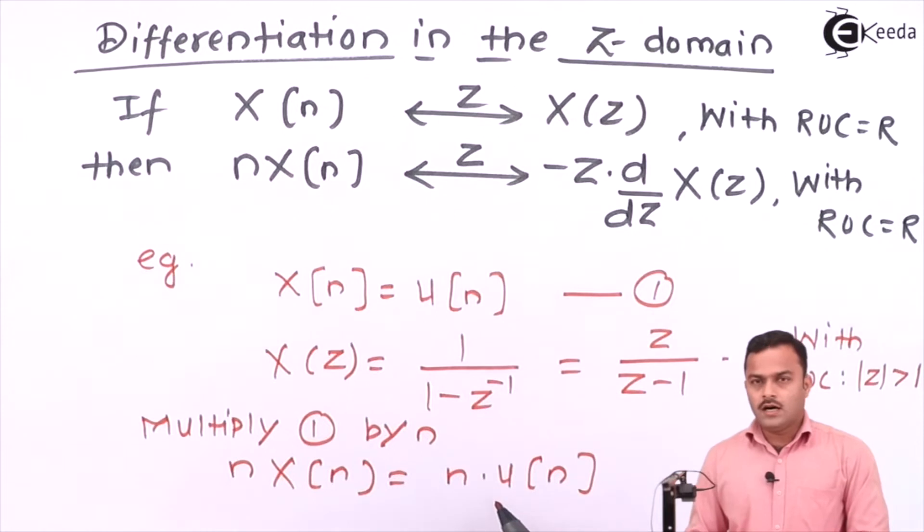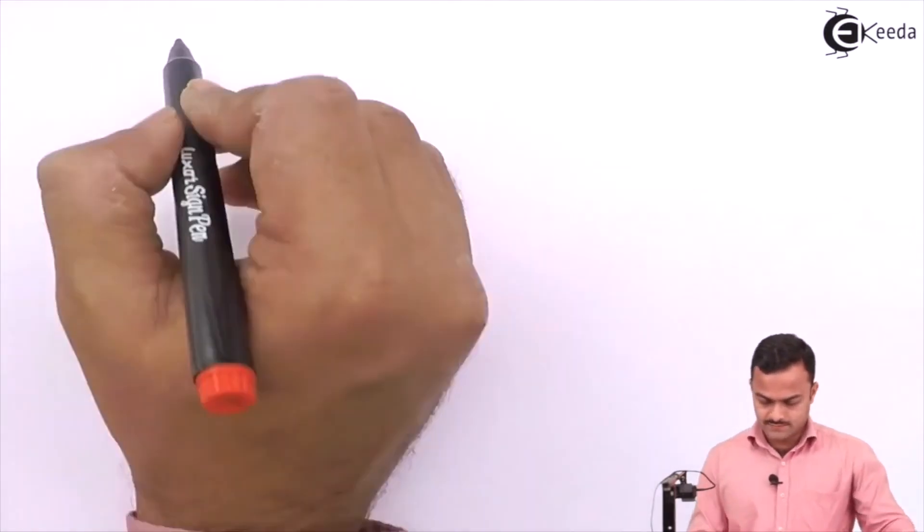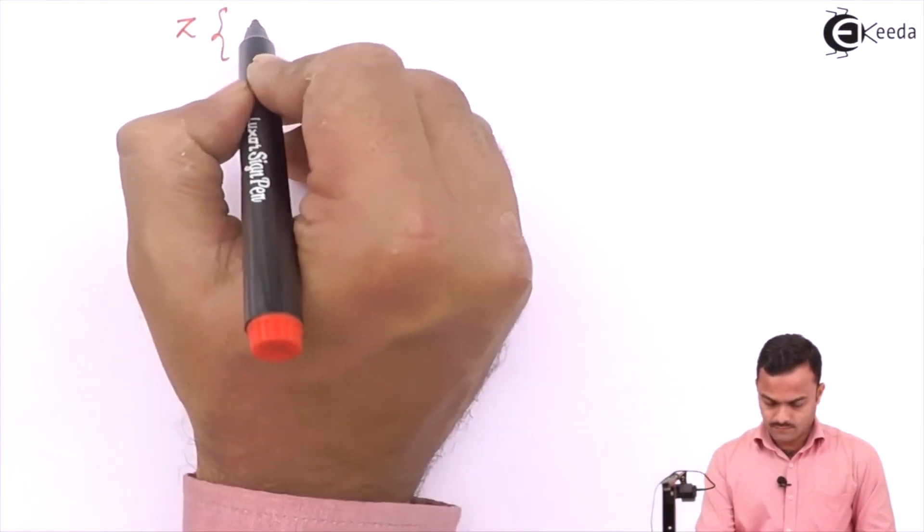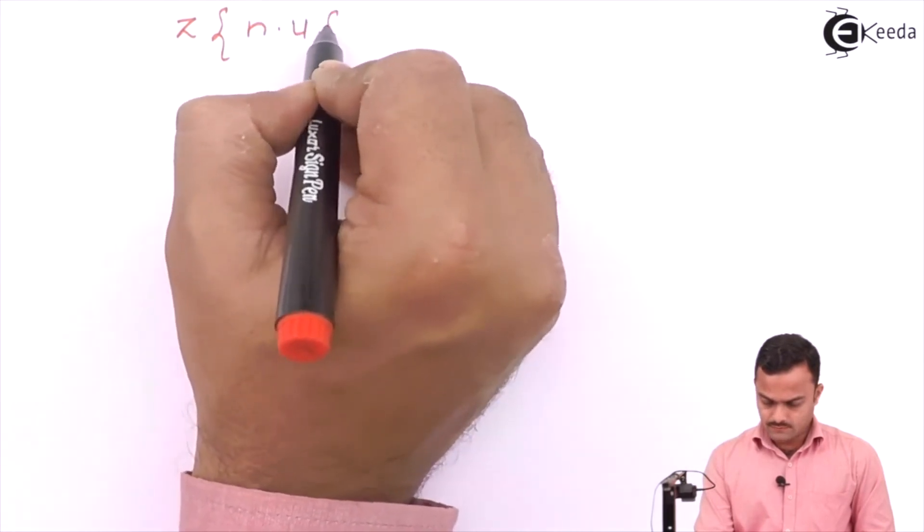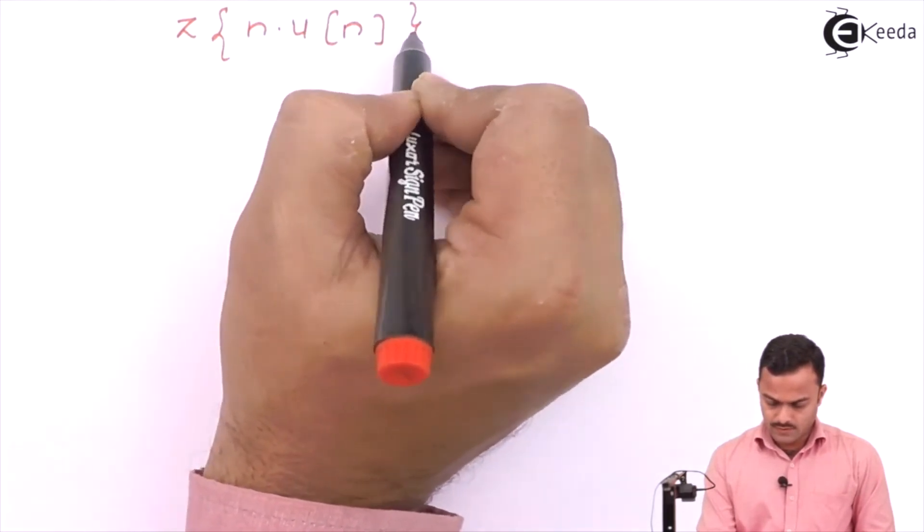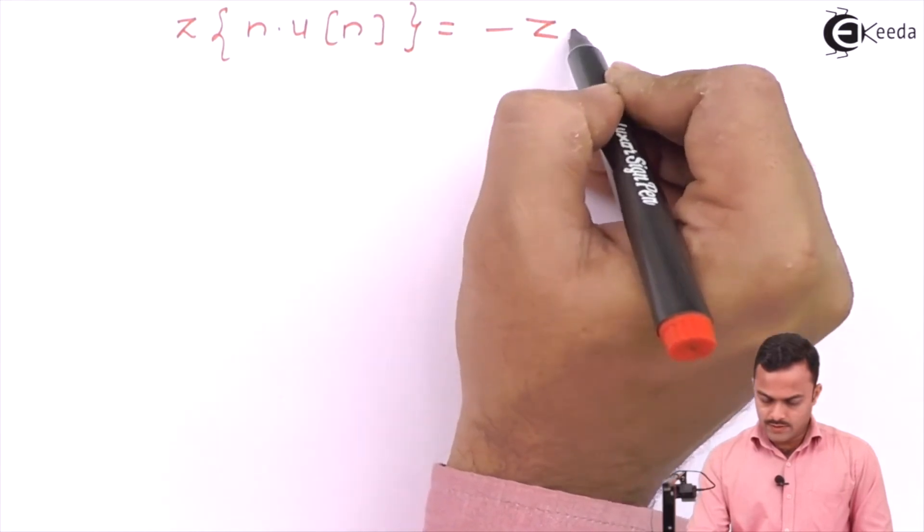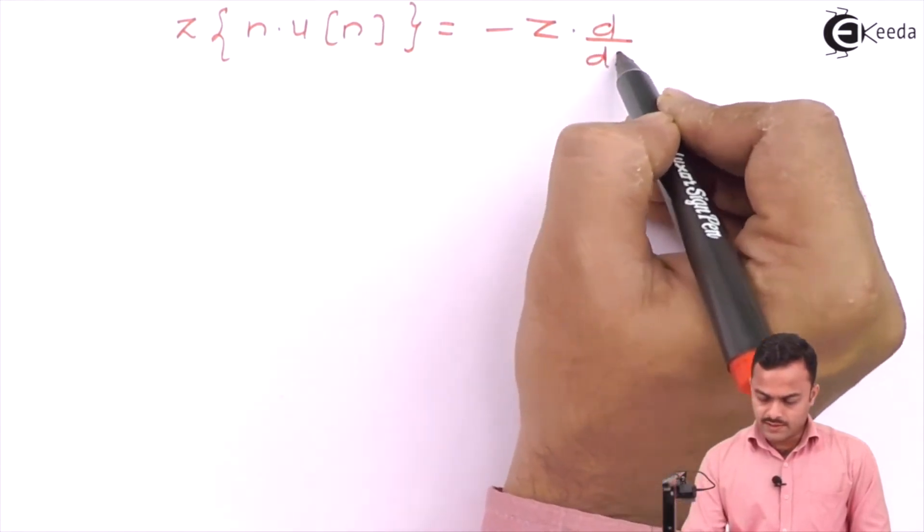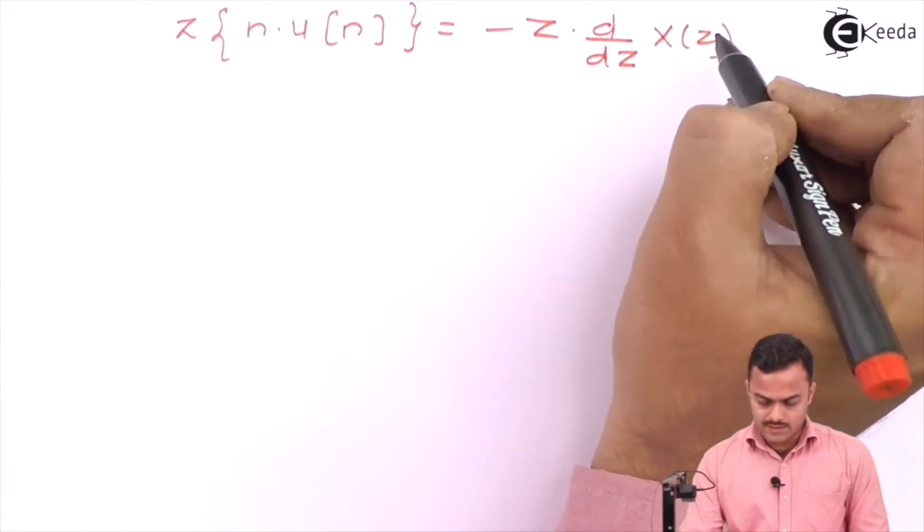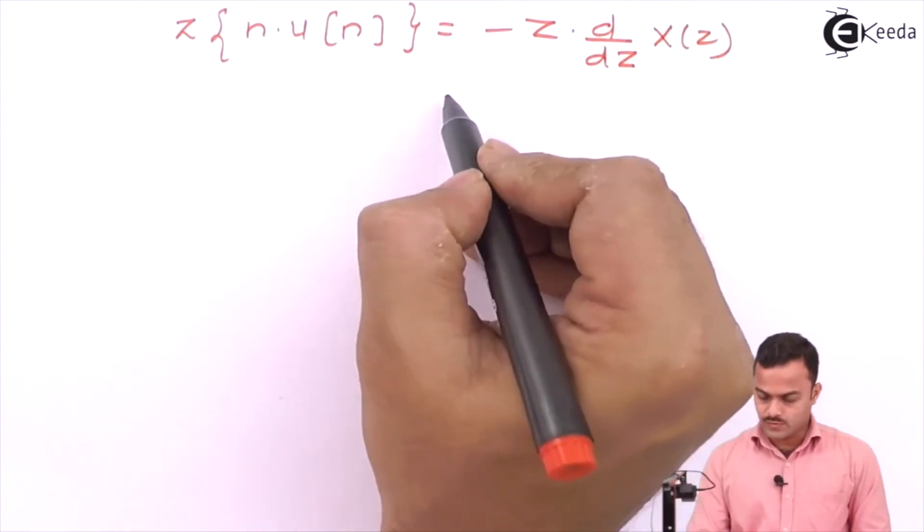And how we can relate with this property: nX(n) is nothing but minus z times dX/dz. So the Z transform of this is minus z times the first derivative of X(z). In our case, the derivative of z/(z - 1).